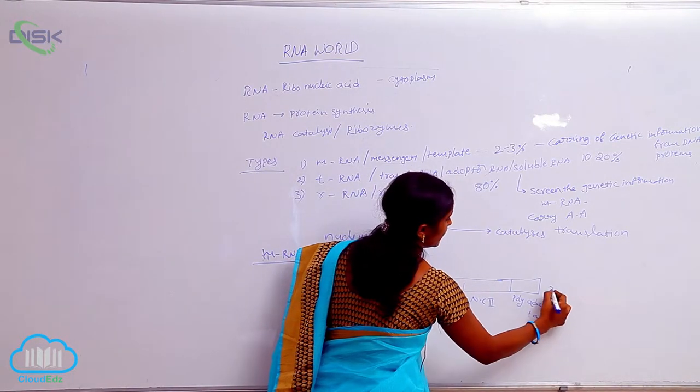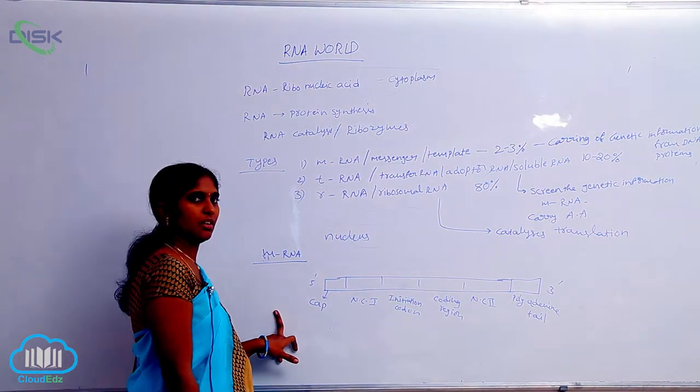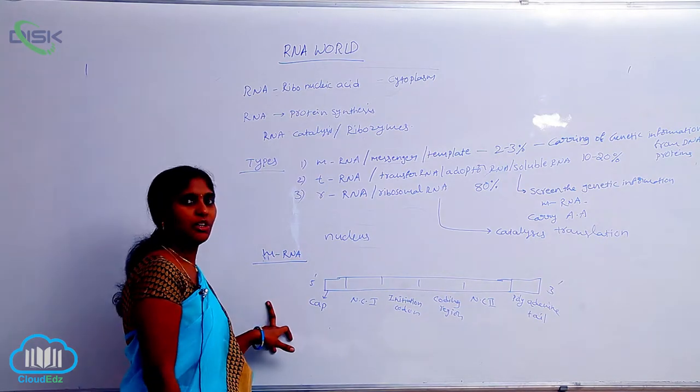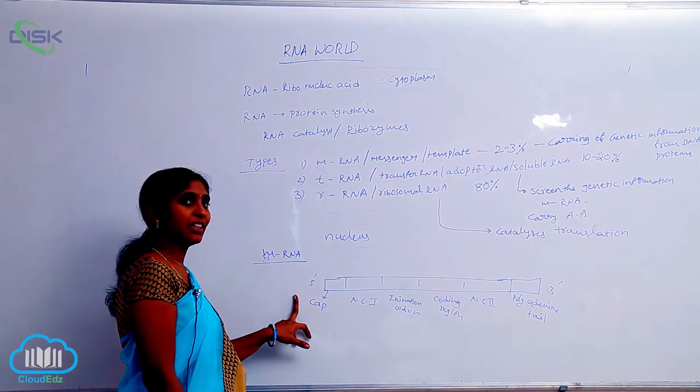Polyadenine tail. These are the key components of mRNA, messenger RNA. Messenger RNA constitutes 2 to 3% of total RNA. At the 5' end, it has the CAP.